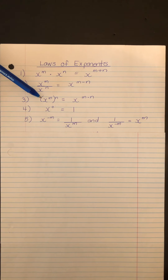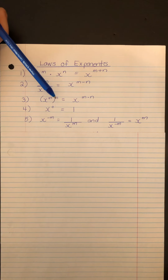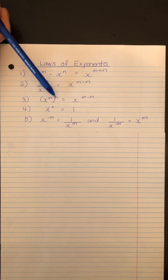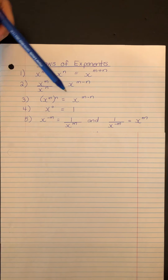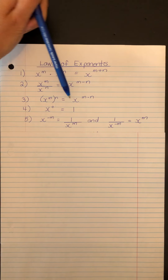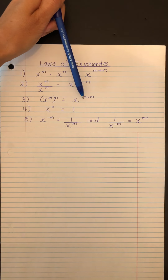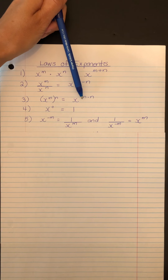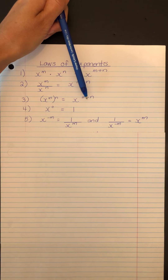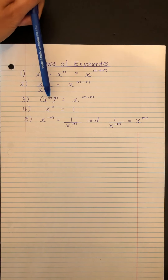In rule three, we have an existing power and we raise it to a second exponent. In this case, it's the same as having the base raised to the overall exponent of m times n. So the exponents multiply.